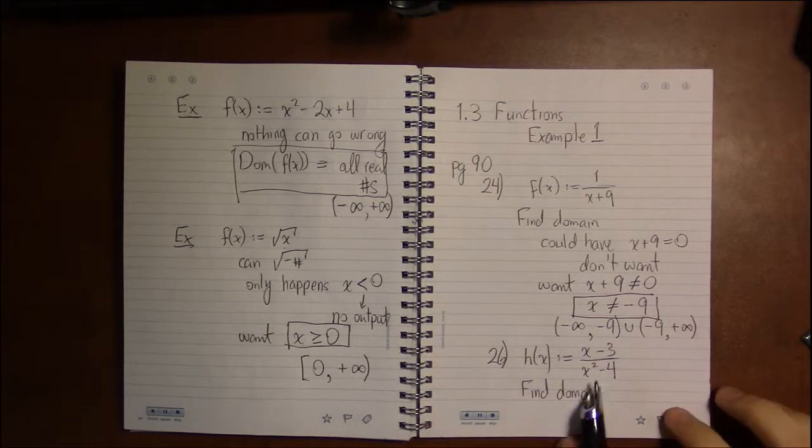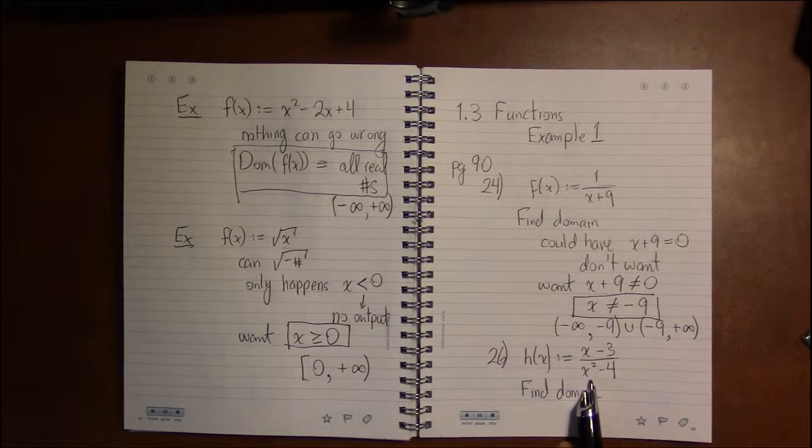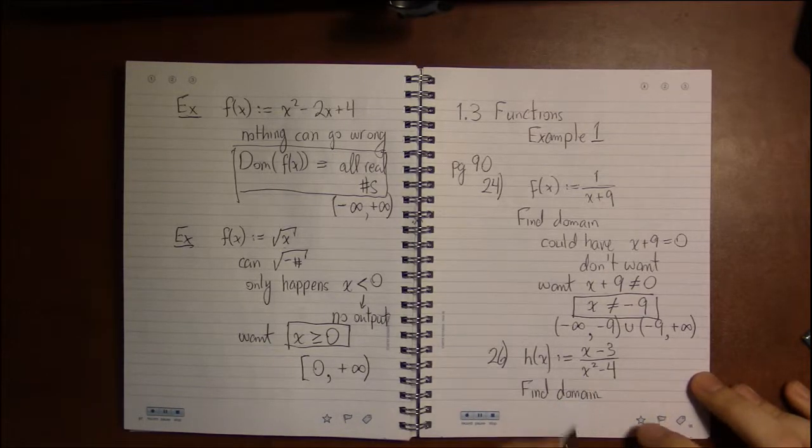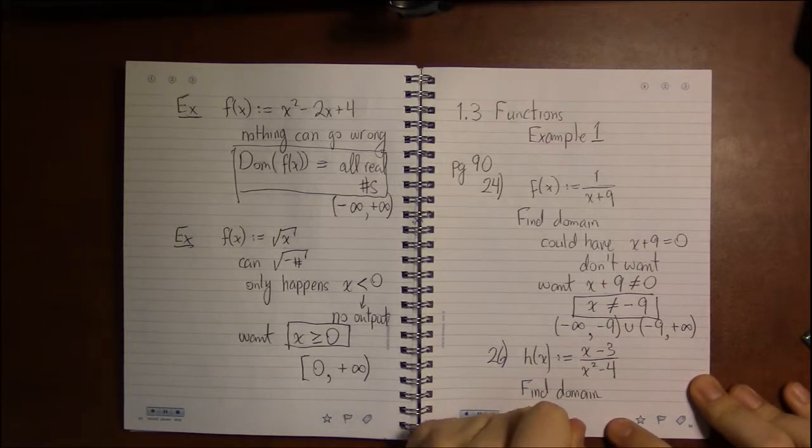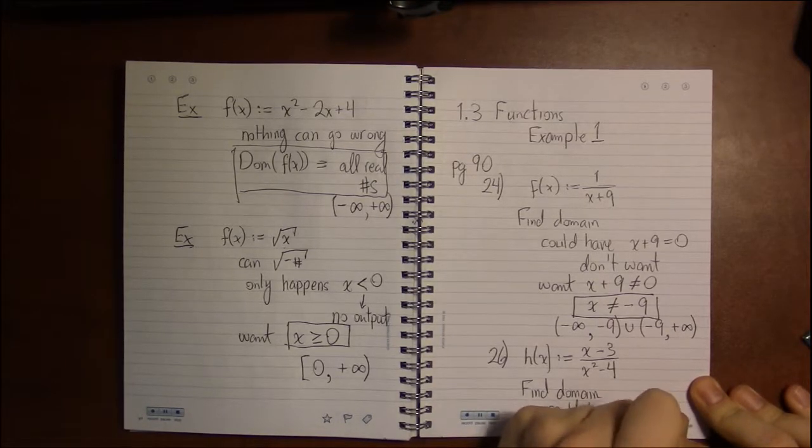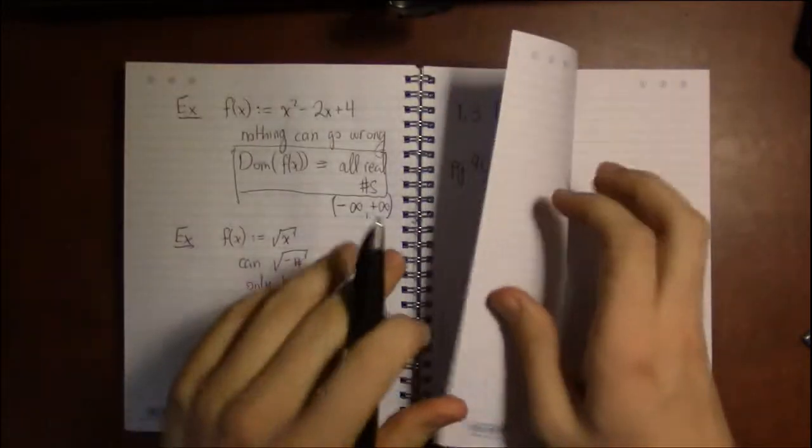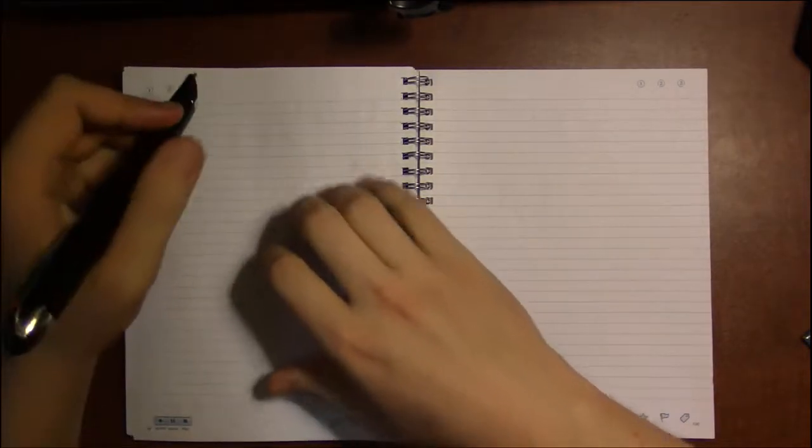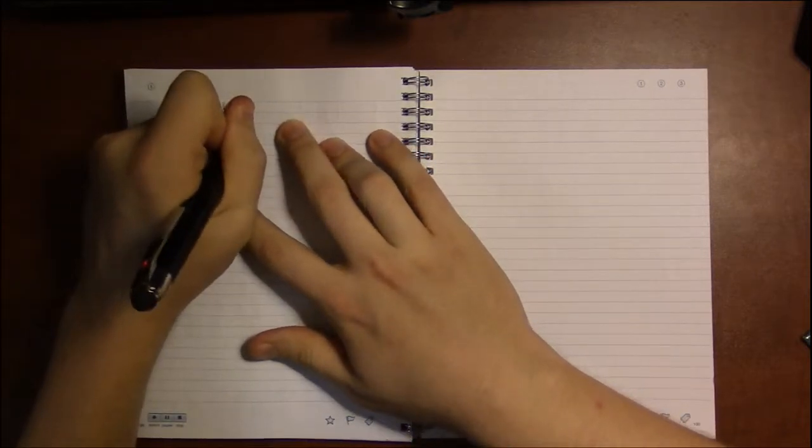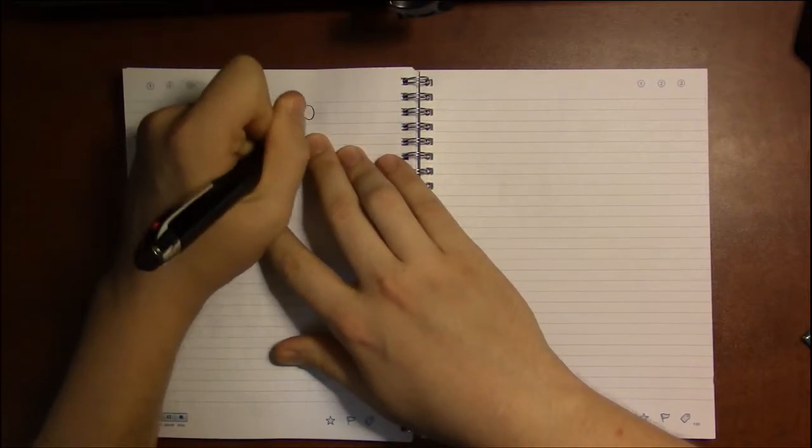Well no square roots, so I'm never going to be taking the square root of a negative number. Don't have to worry about that. But I do have a denominator, and that denominator could be zero, which is exactly what I do not want. So what I want is for x squared minus 4 to not equal zero.